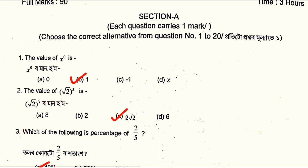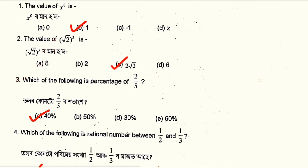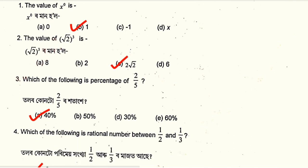The answer to root 2 whole cube will be 2√2, because root 2 whole cube means root 2 × root 2 × root 2. Three terms multiplied together, whose square root gives 2. So the answer is 2√2. Option C: 2. Third question.